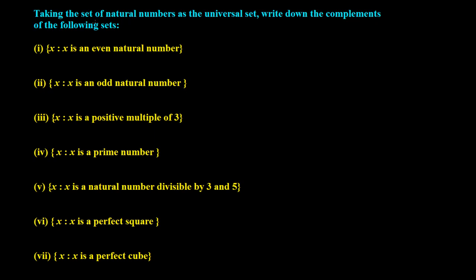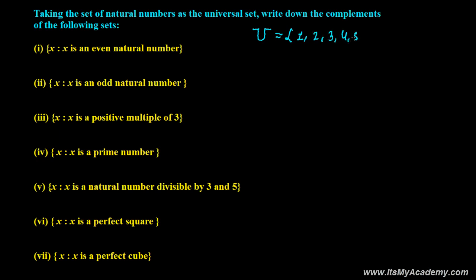Now let's do another complement-related exercise. The question says: taking the set of natural numbers as a universal set. So we imagine our universal set is the set of natural numbers, which starts from 1, 2, 3, 4, 5, 6, and so on. And we need to write down the complements of the following sets.